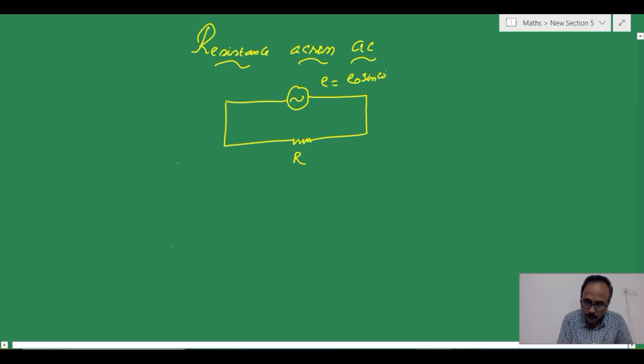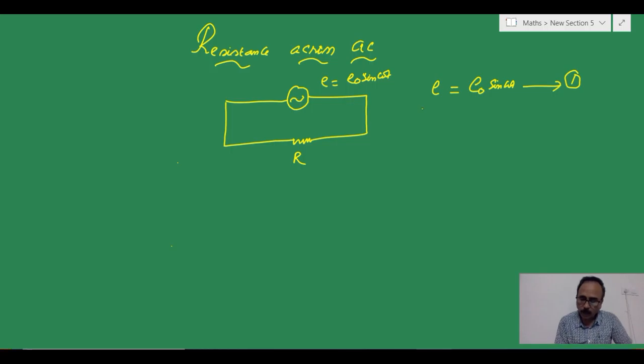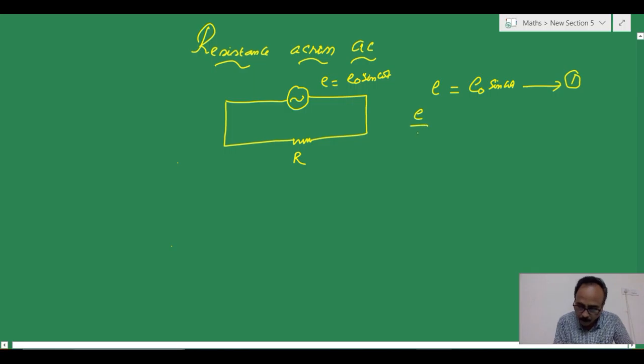The EMF in AC source is E equals E not sin omega t. Now, here E equals E not sin omega t. And from this equation, how can you get the value of current in this circuit? To do that, we have to divide both sides by resistance.